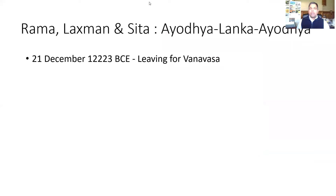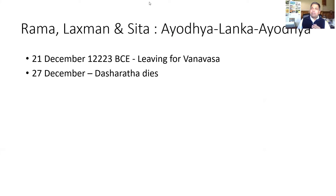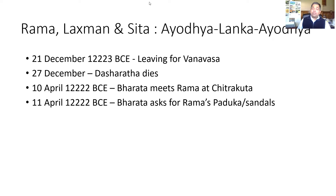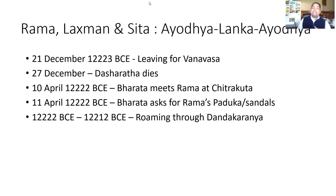To summarize: Rama, Lakshman and Sita left from Ayodhya for Vanvas on 21st of December 12,223 BCE. In about six days, while they were on their way to Chitrakut, Dasharatha died. Bharata met Ram at Chitrakut about three months later on 10th April 12,222 BCE. On 11th April, Bharata asked for Rama's sandals and returned to Ayodhya. The next many years of Vanvas, Ram, Lakshman and Sita spent roaming around in Dandakaranya.